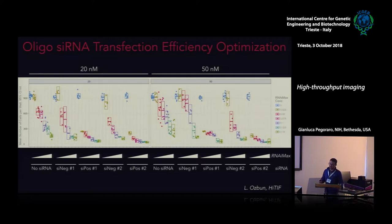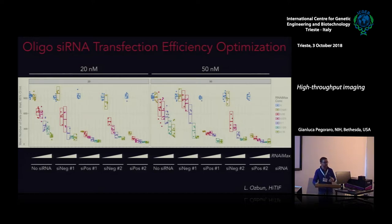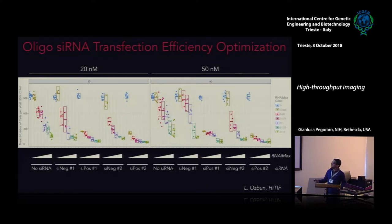For an siRNA screen, another very important step is to deliver siRNAs into cells using transfection reagents in mammalian cells. It's extremely important to optimize transfection conditions. Here I'm showing a titration of a transfection reagent with different siRNAs — with no siRNA, a negative control, and two positive control siRNAs at different oligo concentrations. The positive control siRNA should kill cells and the negative control should not, as a proxy for transfection efficiency.